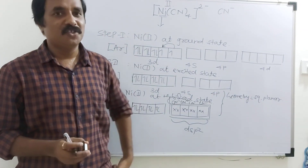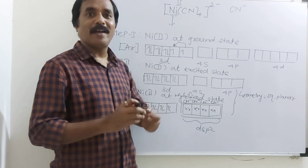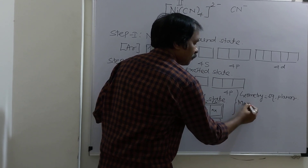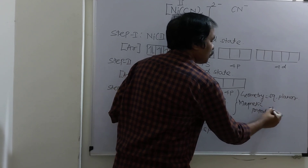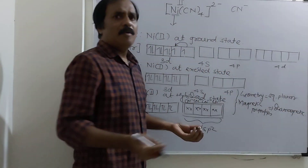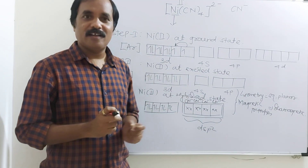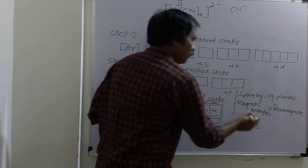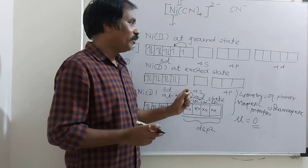Now tell me about the magnetic moment of this complex. Since all electrons are paired, this complex is diamagnetic — there is no unpaired electron. Magnetic properties: it is diamagnetic. When a complex is diamagnetic, the magnetic moment is zero. So the magnetic moment of this complex is zero because all electrons are paired and there is no unpaired electron.